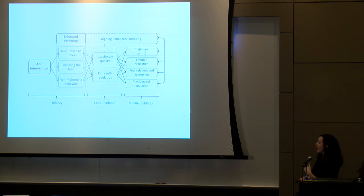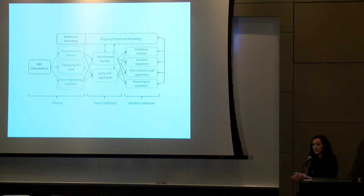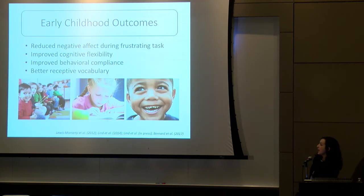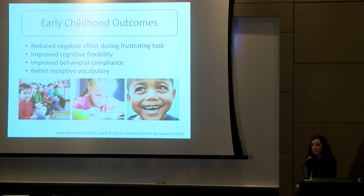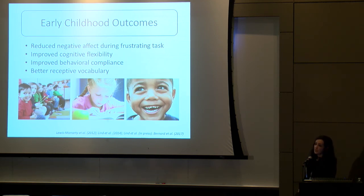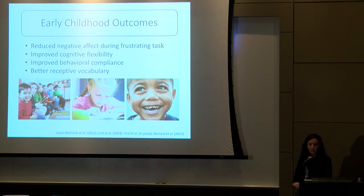Given that enhancing early attachment and early self-regulation should lead to other consequences that affect brain development and then outcomes related to cognitive ability or behavioral outcomes, we've tested some other outcomes associated with ABC and found positive effects on children's affect expression and regulation as well as aspects of executive functioning like cognitive flexibility as well as behavioral compliance. And also aspects that might point to enhanced school readiness like higher receptive vocabulary at preschool age.